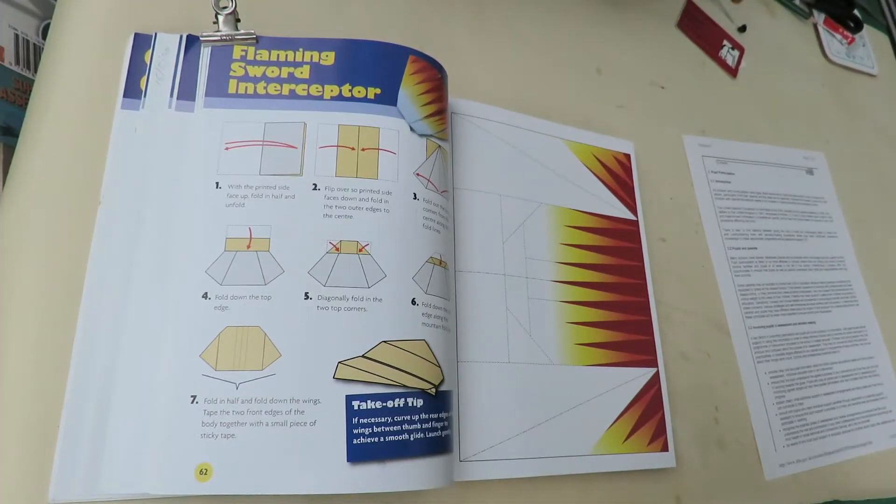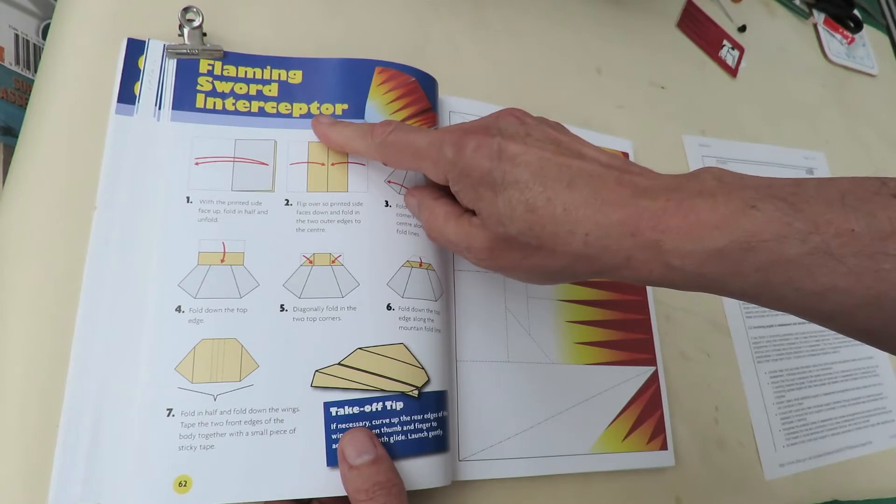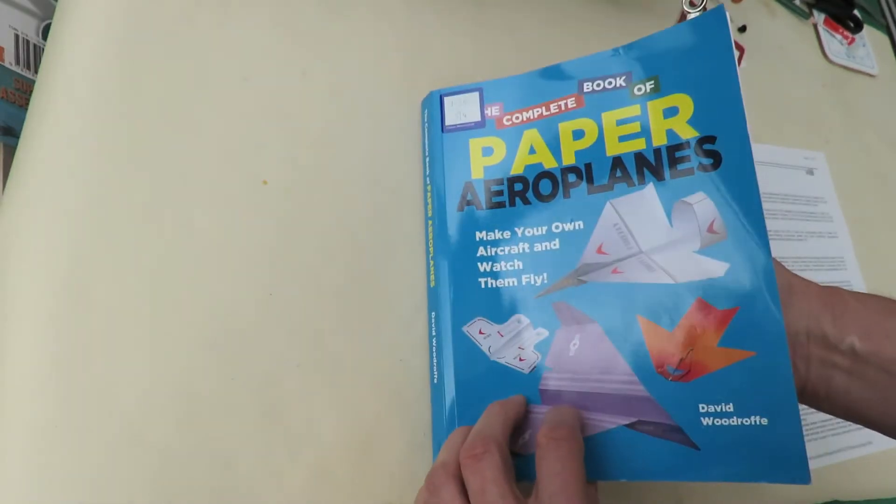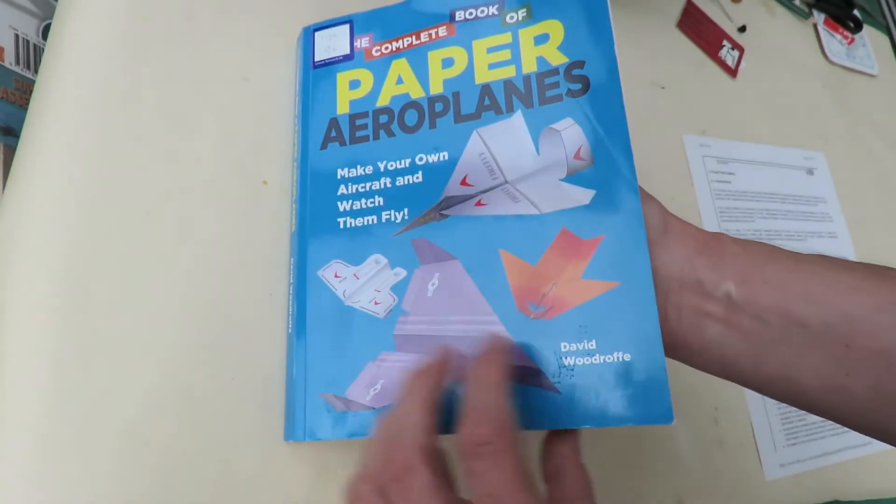Hi guys, time for another paper airplane. This one is the Flaming Sword Interceptor from the complete book of paper airplanes by David Woodruff.